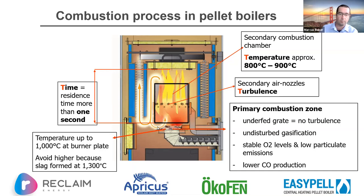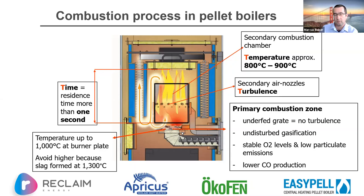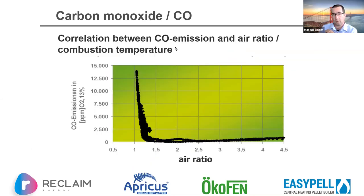We get quite high temperatures down at the bottom in the primary area, but we've got to be careful — especially in New Zealand — because we've got very high silica content in a lot of our pellets. They still meet international standards but tend to have quite high content due to our volcanic soils. We don't want temperatures above 1,200 to 1,300 degrees here because you get slag formation, which occurs if there's not enough air and combustion products are not being moved through the system.